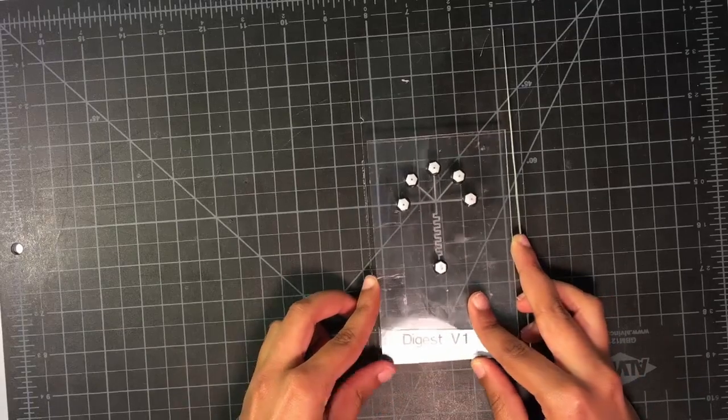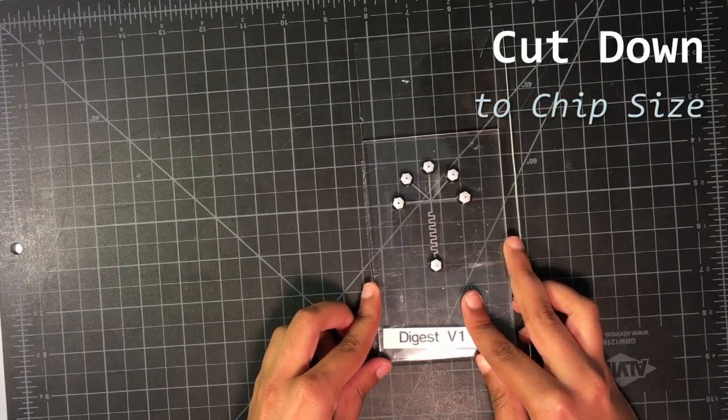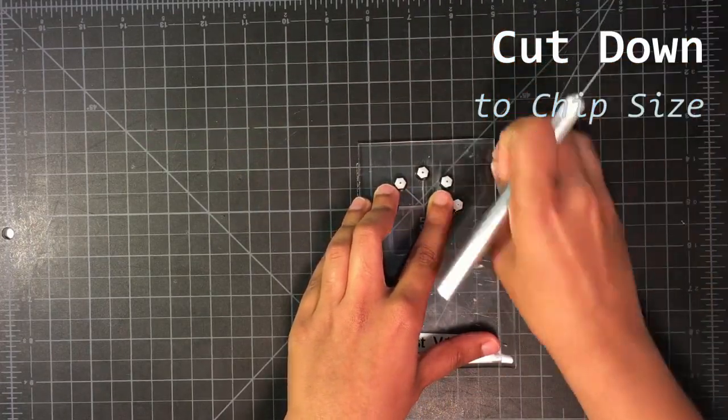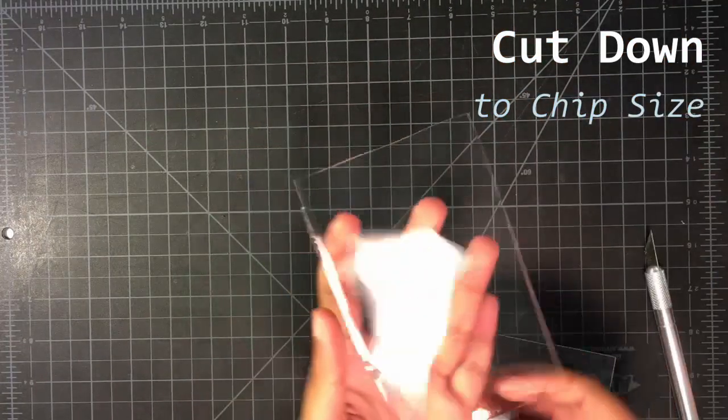Finally, place a chip of the desired dimensions on your PDMS and use the exacto knife to cut it down to size. Congratulations! You now have PDMS to use in your chip.